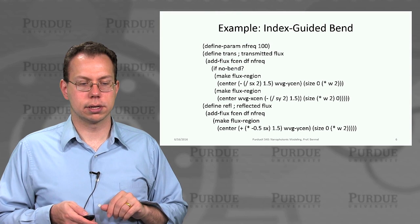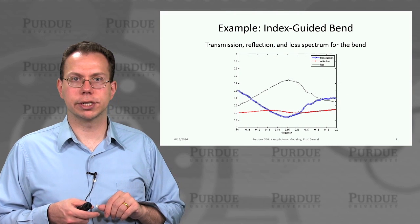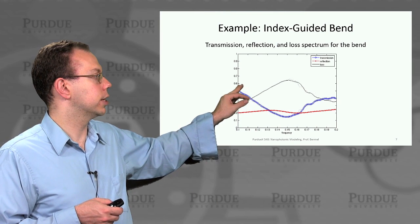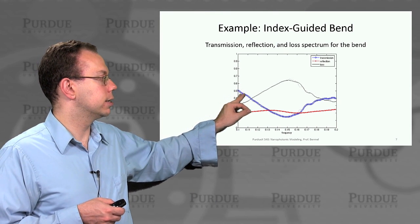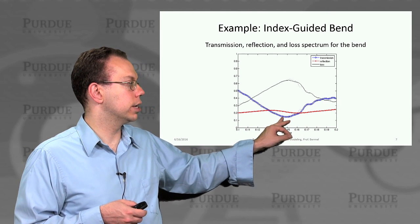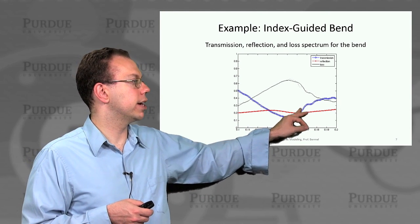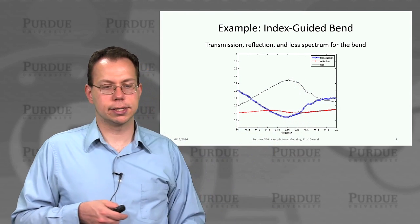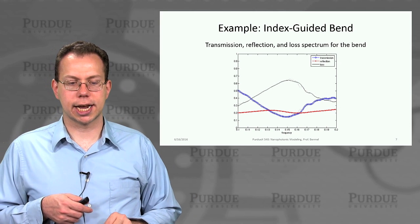But the overall result looks something like this. You can see basically the transmission around the bend is very frequency dependent. It drops a lot as you go to this critical frequency about 0.15 goes back up again. So of course the loss also peaks exactly where the transmission is at a minimum.